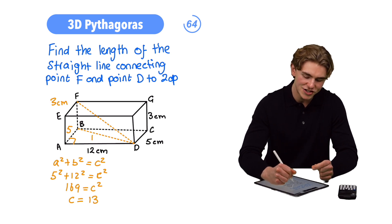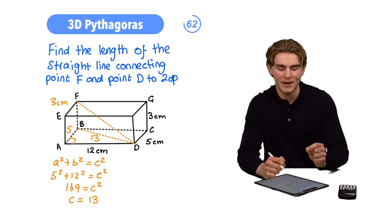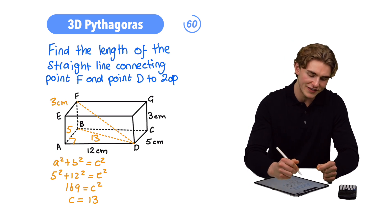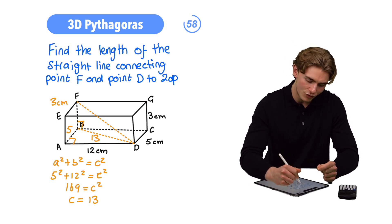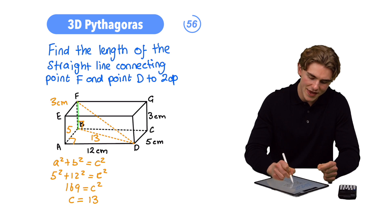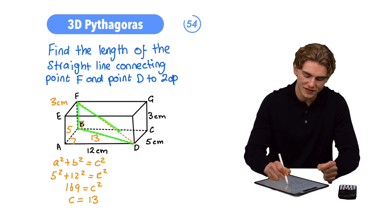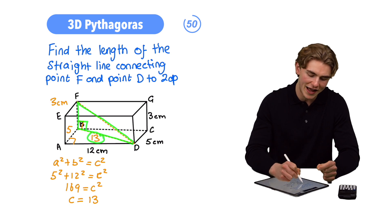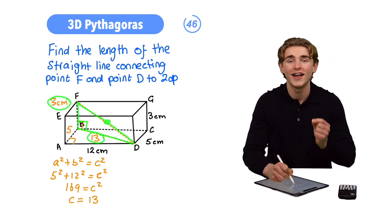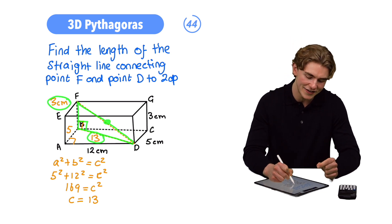Now, where can we go from there? Just like I was saying before, we can use Pythagoras' theorem in this bigger right-angled triangle here. We can see that there's a right-angled triangle which joins FBD. The right angle is down here. We have a base of 13, we have a height of 3, and the hypotenuse is going to be that length that we're looking for, the straight line connecting F and D.